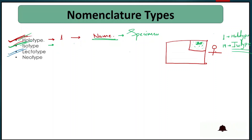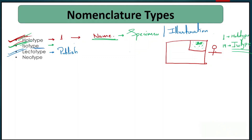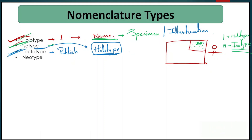Next we are going to study lectotype. Sometimes the holotype is not present. In that case, a material that was used as part of the original collection is used as the nomenclature type, and this is called a lectotype.